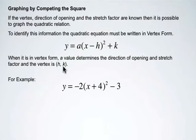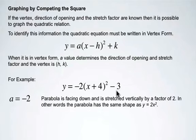For example, when y equals negative 2 times x plus 4 squared minus 3. Notice that this is in vertex form. Our a value is negative 2. So the parabola is facing down and is stretched vertically by a factor of 2. In other words, the parabola has the same shape as y equals 2x squared. Our h and our k tell us that their vertex is at negative 4, negative 3.